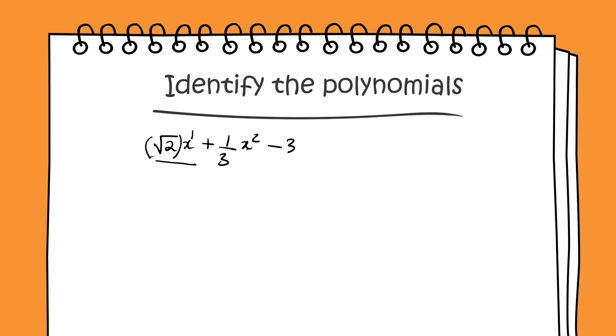And if we come to the next term, the power of x is 2. Though we have 1 by 3, 1 by 3 is a constant. So we are not looking at the constants at all here. We are only concerned about the powers of the variable.